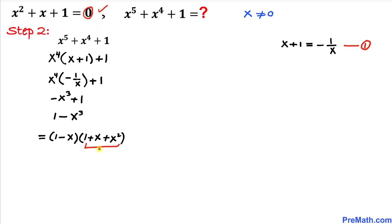Therefore, we are going to replace this part by 0. So we can write this as (1 - x) times 0, and that equals 0. Thus, the value of x⁵ + x⁴ + 1 turns out to be 0.